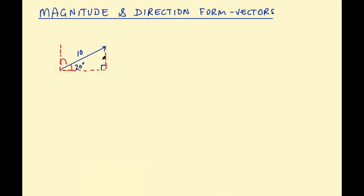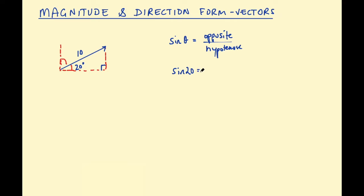Think back to GCSE mathematics — you learned how to find the lengths of a right triangle given an angle and the hypotenuse using the trigonometric ratios. To find the opposite side (the vertical distance), we use the sine ratio: sine θ = opposite / hypotenuse. In this example, sine 20 = y / 10, so y = sine(20°) × 10.